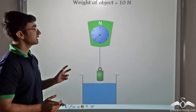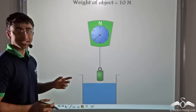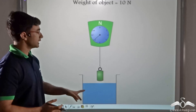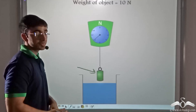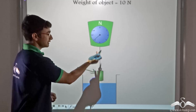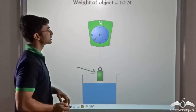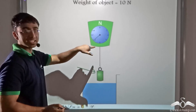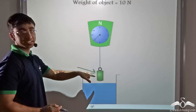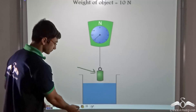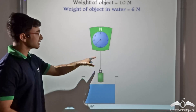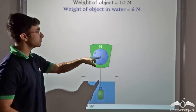Let me demonstrate how we can calculate the buoyant force acting on an object when it is immersed in water. We take this particular object and weigh it in air. The weight in air is 10 Newtons as you can see from the scale. This object is then immersed in water while still connected to the scale, and the reading decreases and becomes 6 Newtons.